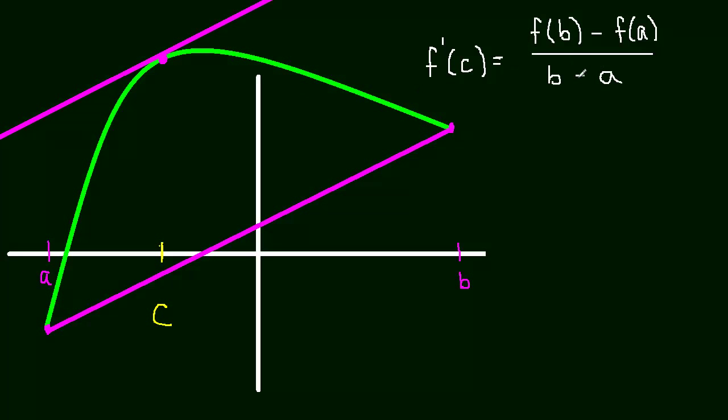So anyways, so that's the theorem. The derivative, the slope at a point in between A and B, must be equal to the slope of the secant line between A and B. And the reason that makes sense is because, let me draw you another little graph here.